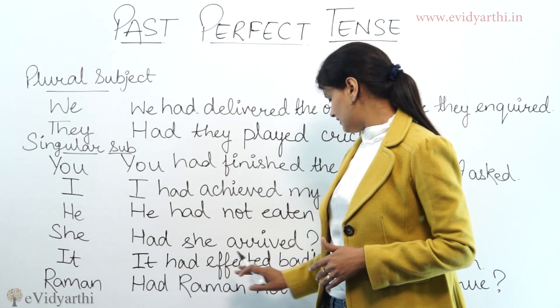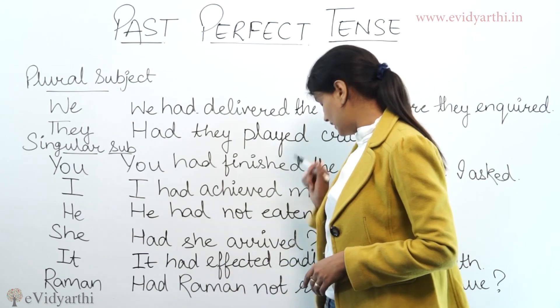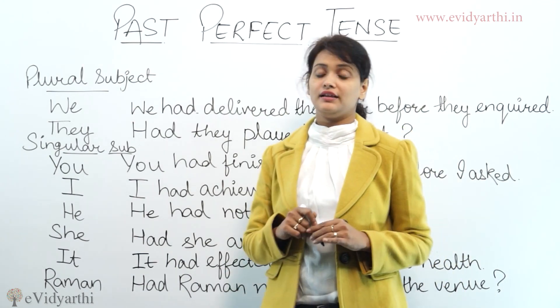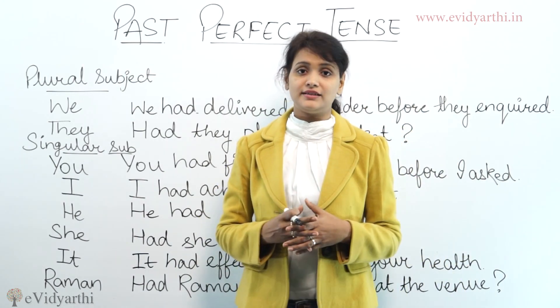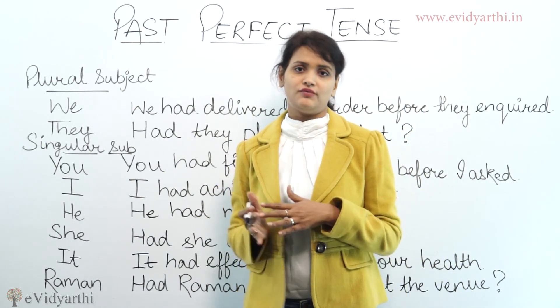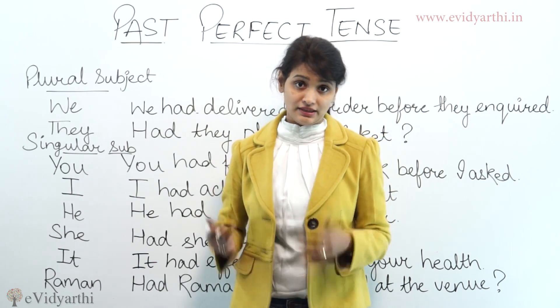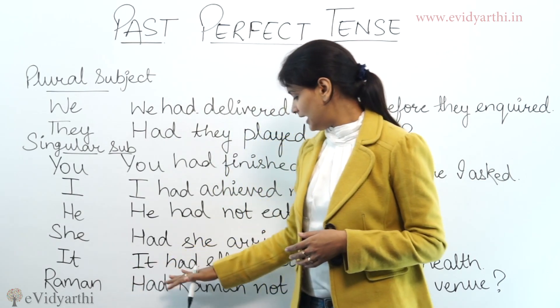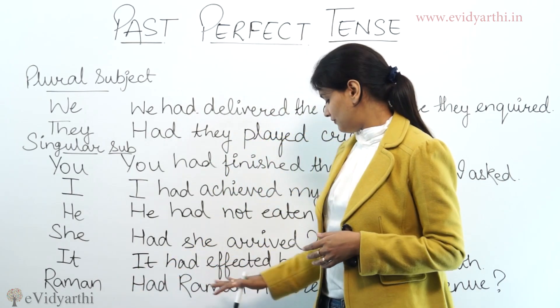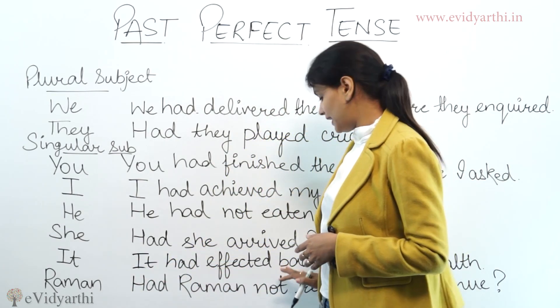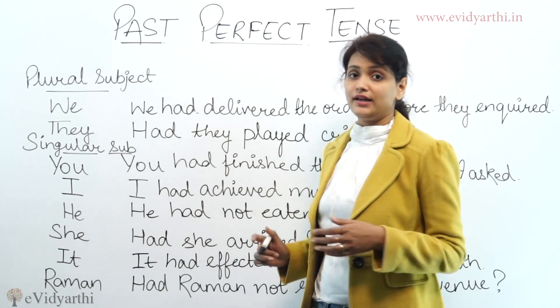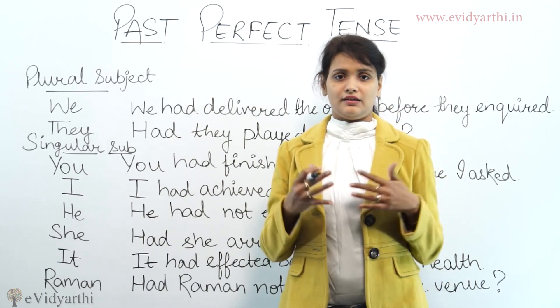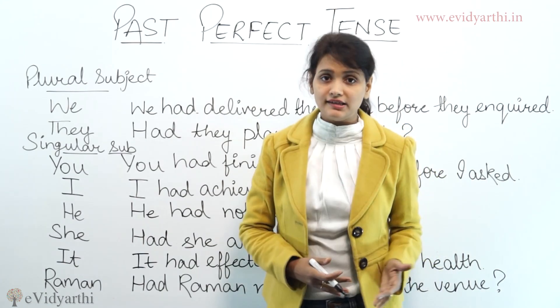Another example: 'It had affected badly on your health.' You had taken some medicines but it didn't go well. 'It had affected badly on your health a few days earlier.' Since the affecting happened earlier in the past, we use 'had' plus the third form of the verb 'affected'.